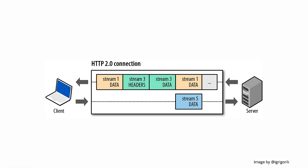In HTTP2, the browser and the server — the client and server — can exchange these frames basically in any order. So you can have multiple requests outstanding. The server can reply in different orders and can intermix responses with other ones.